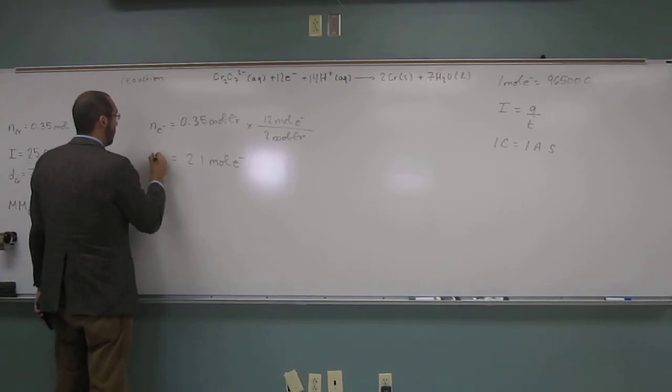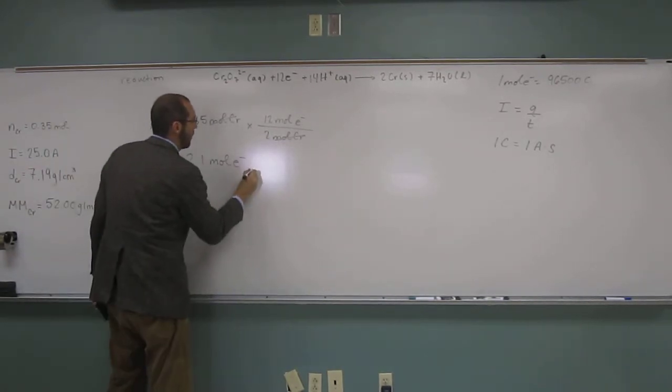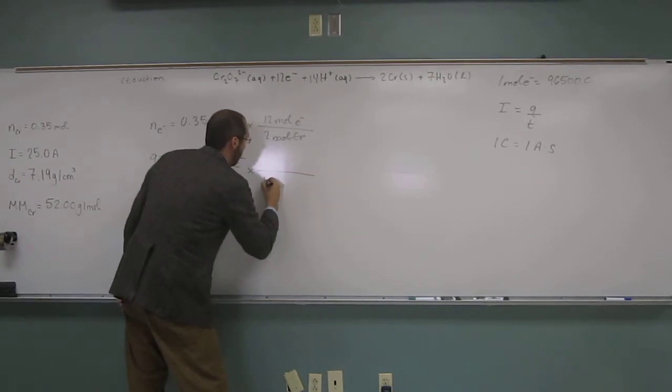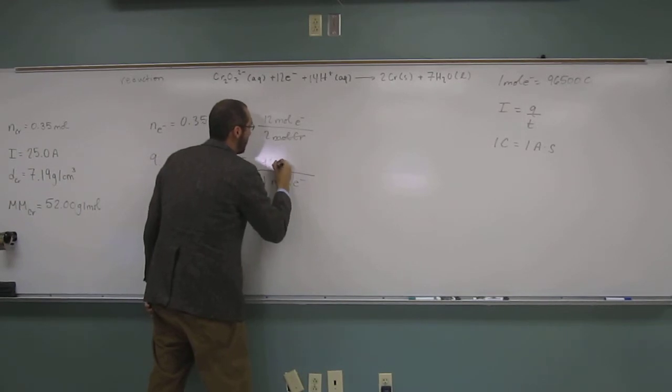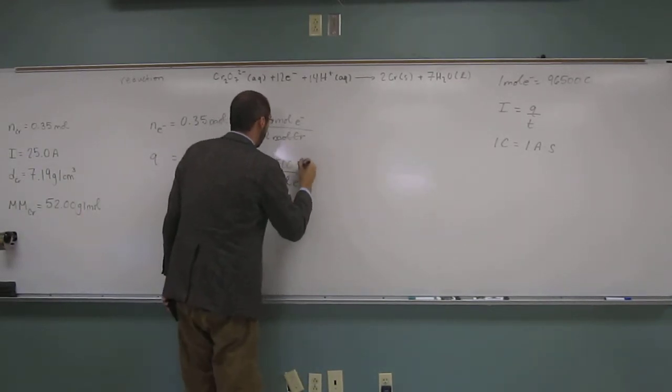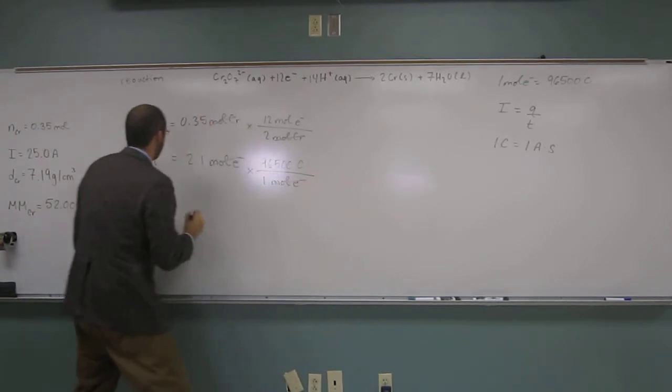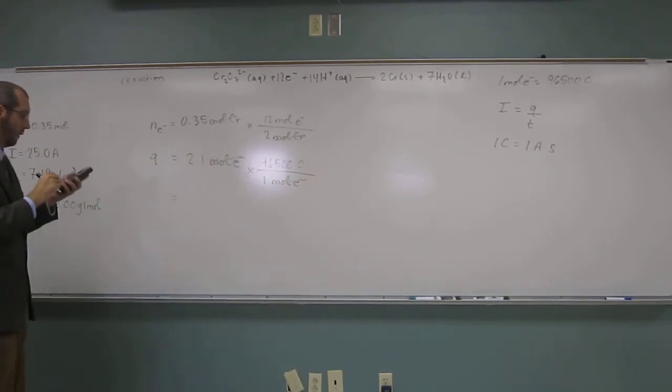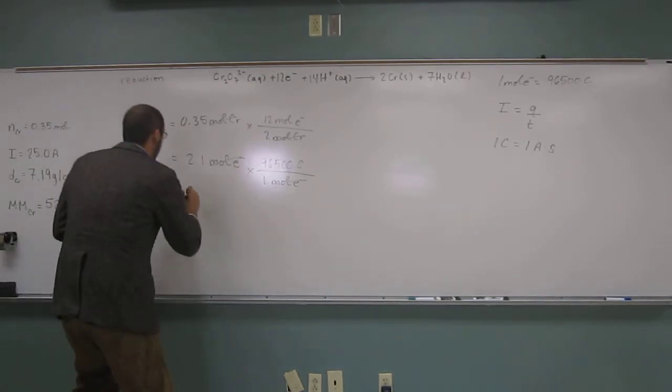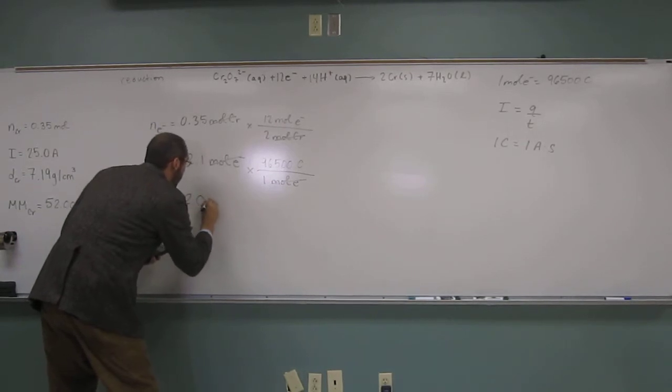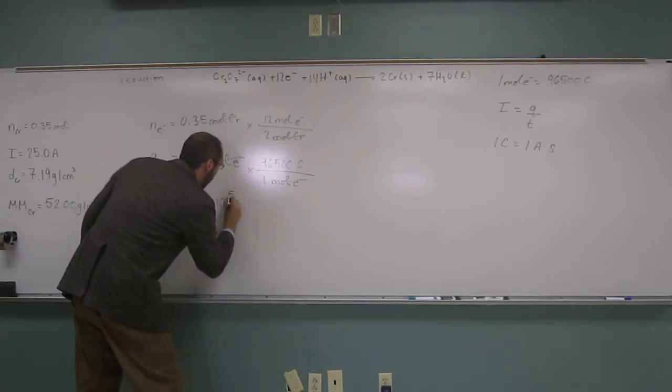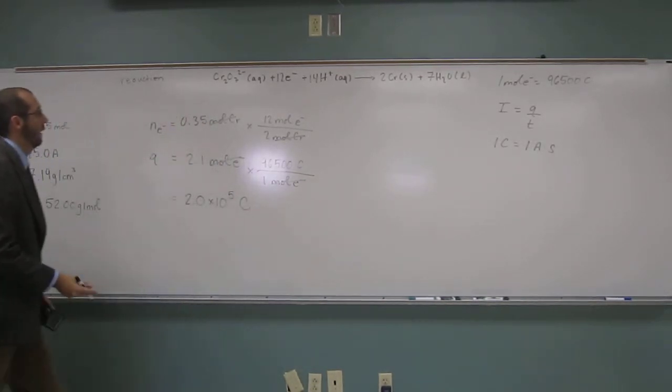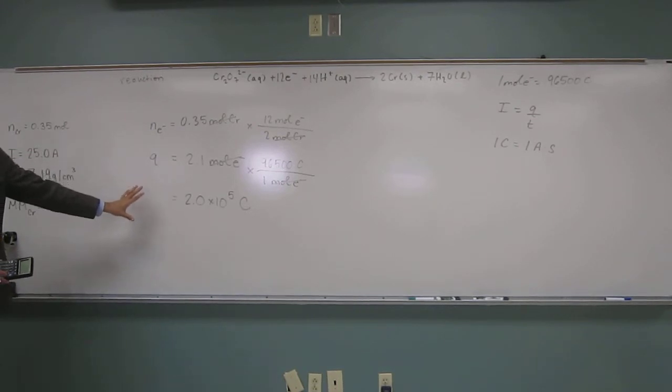So, what's the number of coulombs? So, the Q of this number of electrons is going to be 2.1 moles of electrons, one mole of electrons, 96,500 coulombs. 2.0 times 10 to the 1, 2, 3, 4, 5 coulombs. Like that. So, everybody set with what we've done so far? Wonderful.